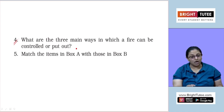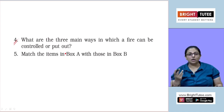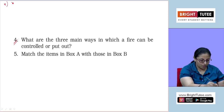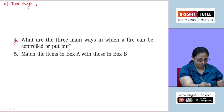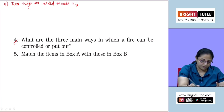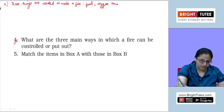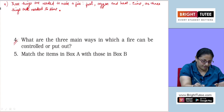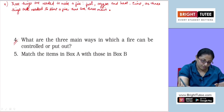Question number four: what are the three main ways in which a fire can be controlled or put out? Either you take out the fuel, or you take out the oxygen, or you take out the heat. Three things are needed to make a fire: fuel, oxygen, and heat. As three things are needed to start a fire, there are three main ways to put it out.